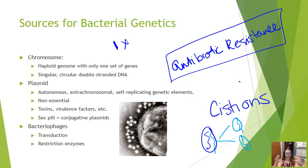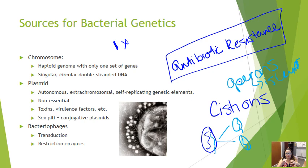Bacterial genes are grouped into operons — another keyword to keep in mind. Operons are basically islands, and these islands share a function. In pathogenic organisms, they are typically referred to as pathogenicity islands, where these gene clusters share a function that is normally not good for us and is very good for the organism.